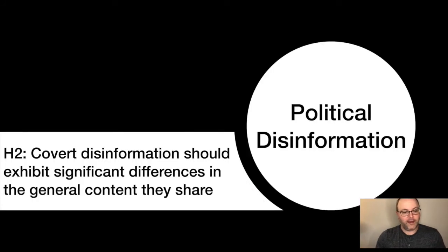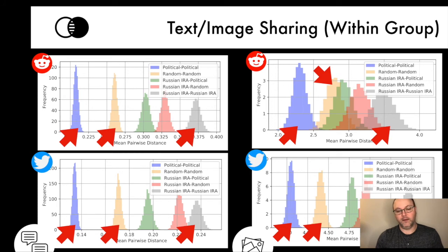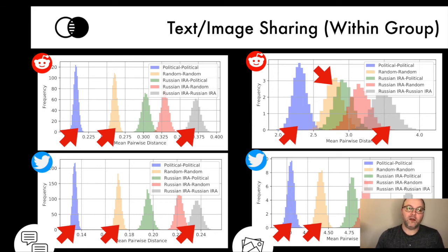Looking at H2 and covert disinformation — significant differences in general content sharing — we see consistency in text and image sharing. The blue curve is within-group similarity for political accounts, yellow for random, and gray for IRA to IRA. Across all four figures, the IRA is furthest to the right and political groups are furthest to the left, suggesting political groups share a core set of similar text and images, whereas the IRA shares very different content — content that is actually more different than one would expect from pairs of random accounts.